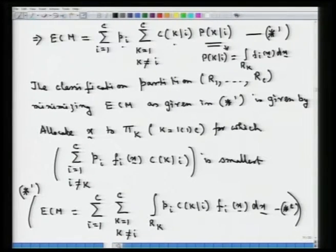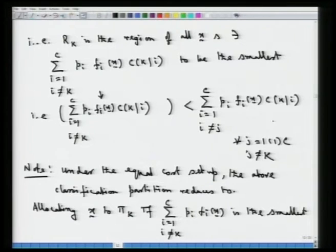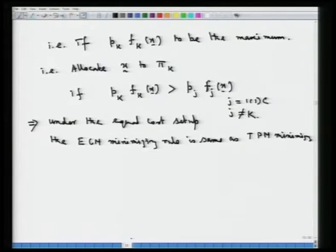We had also looked at the rule which would minimize the total probability of misclassification. The two rules were seen to be the same when we were looking at a rule that minimizes the expected cost of misclassification. Under the equal cost setup — where the costs of misclassification are all assumed to be equal — one naturally gets the total probability of misclassification minimizing rule. That is what we had seen in the last lecture.